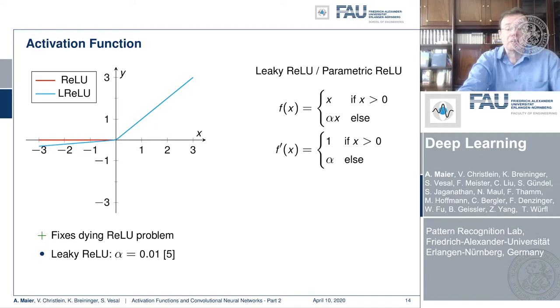And for the leaky ReLU, alpha is typically set to values like 0.01. The parametric ReLU is a further extension and here you make alpha a trainable parameter. So you can actually learn for every activation function how large alpha should be in a system called PreLU.